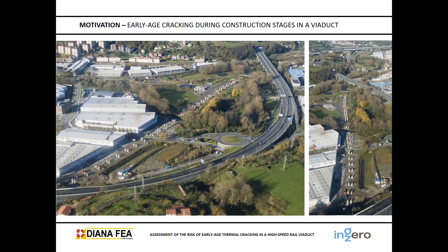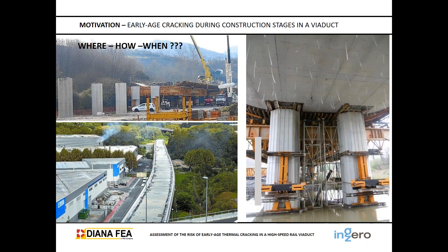Let's see what is the motivation of our study. In the picture we can see this high-speed viaduct. It is in the north of Spain in the Basque Country, forming part of the high-speed railway lines connecting the three capital cities: San Sebastian, Bilbao, and Vitoria. In the photograph we can see the construction of the piers for the long viaduct. We are studying early age cracking during construction stages because, as they were constructing the viaduct, they observed some cracks. The viaduct is constructed span by span.